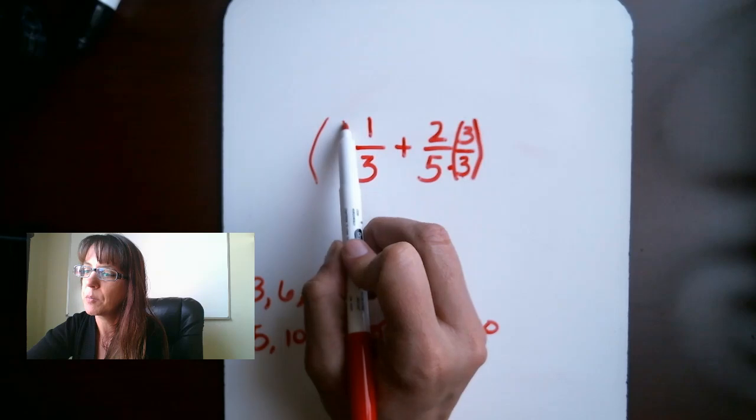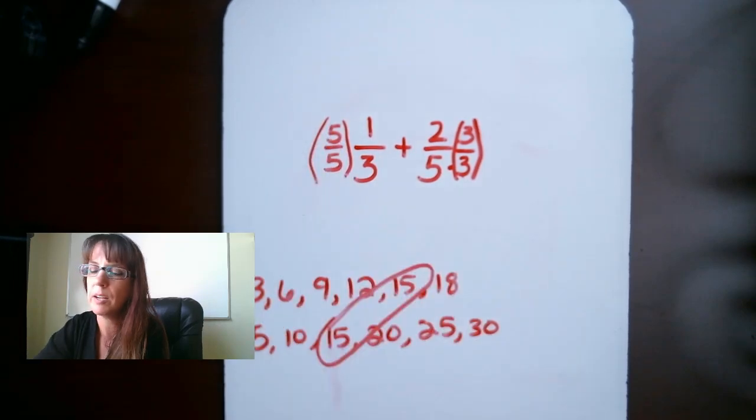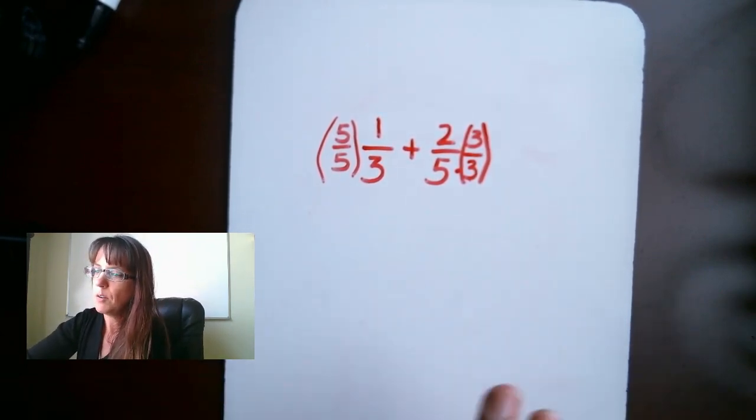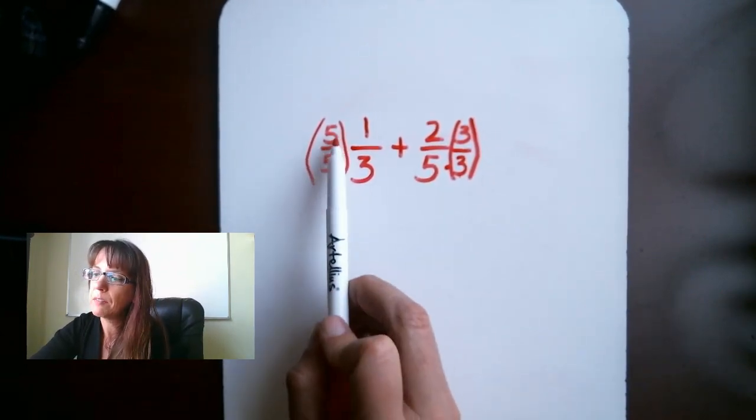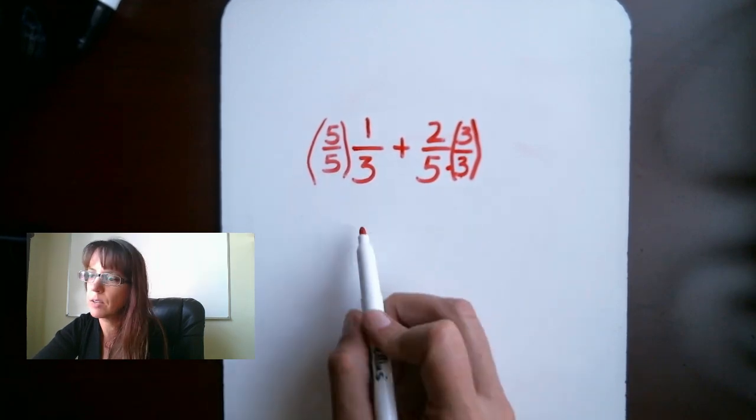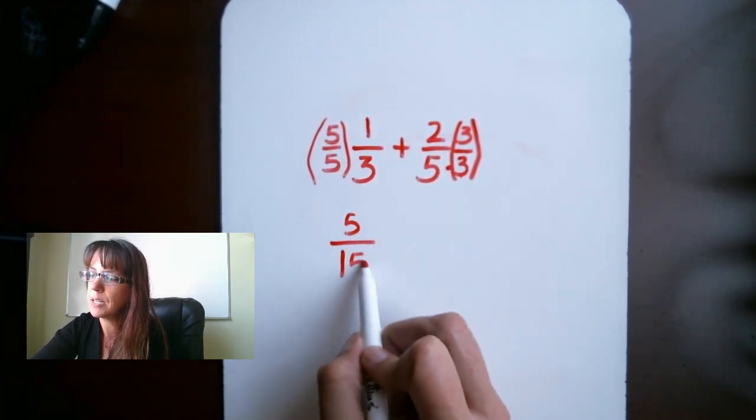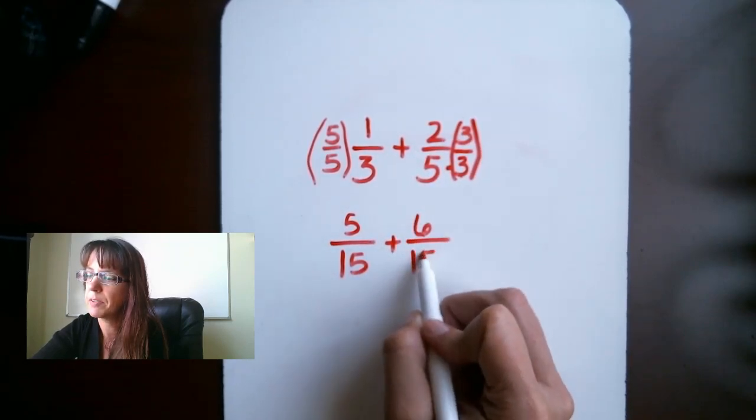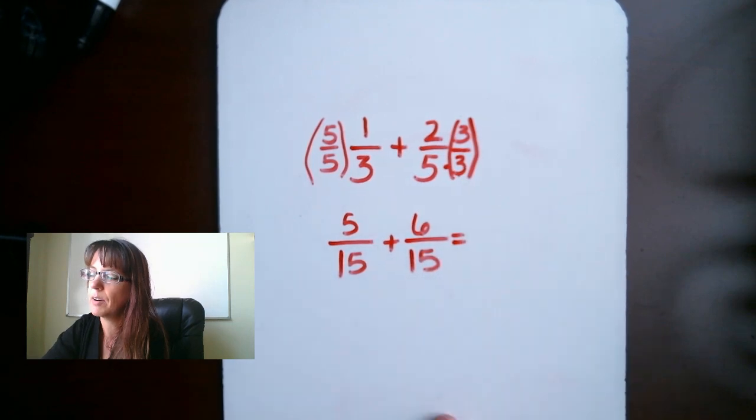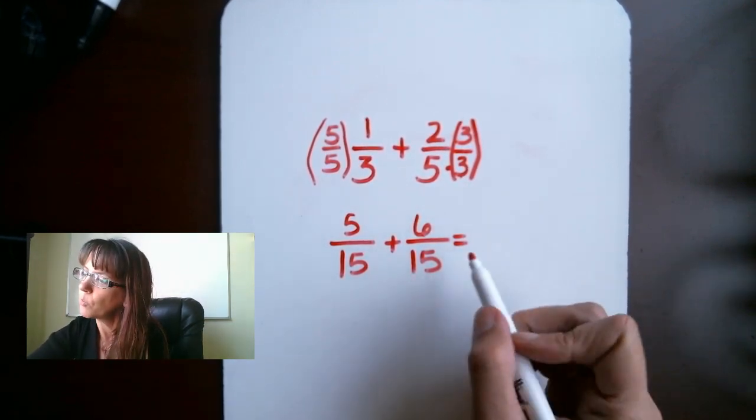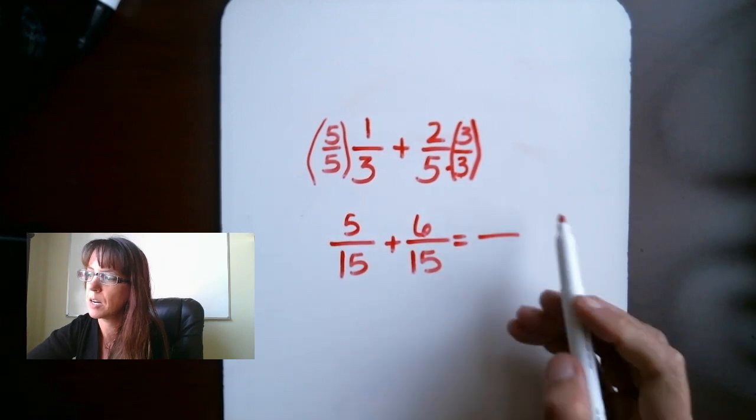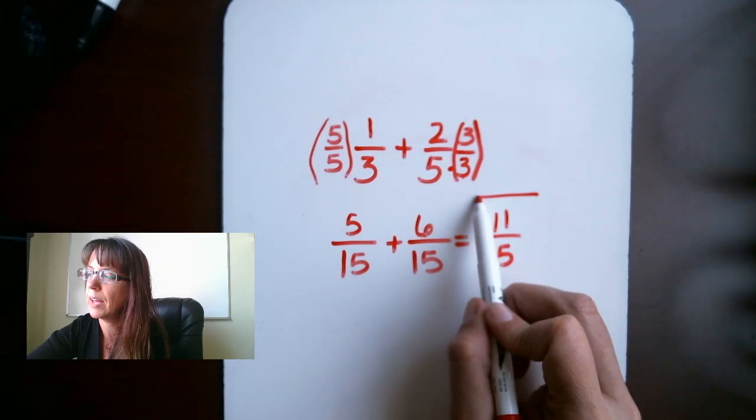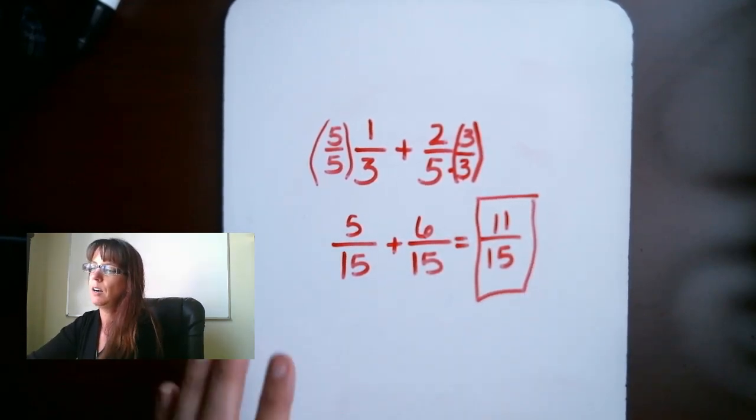On this side, we want to multiply by 5 over 5. Now that I've done my work here, my side work here, I'm going to erase that. So taking a look at this, we have 5 times 1 gives us 5. 5 times 3 gives us 15, plus 2 times 3, which gives us 6, and 15. So now we have that common denominator. At this point, we just bring that denominator over, 15, and then we do 5 plus 6, which gives us 11. And that is your answer.